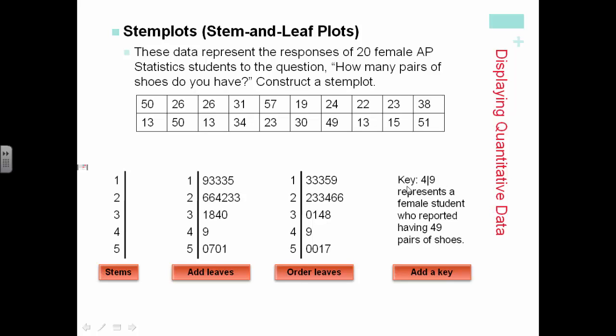So, here's how we would write a key. 4-9 represents a female student who reported having 49 pairs of shoes.